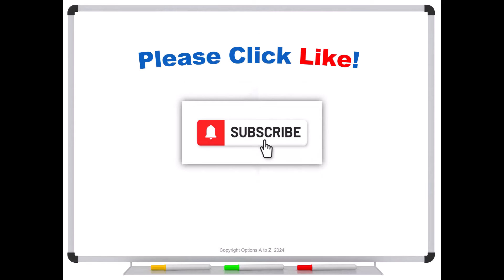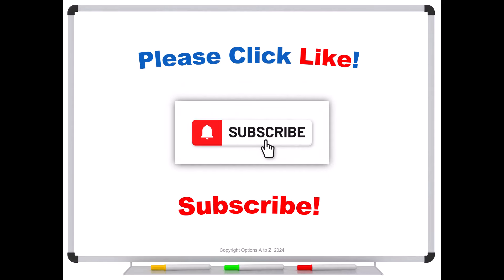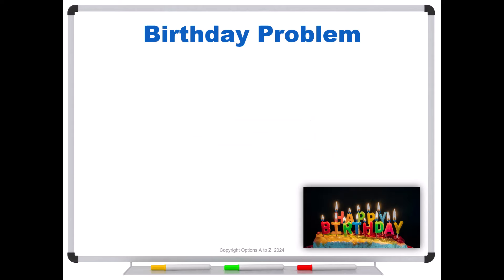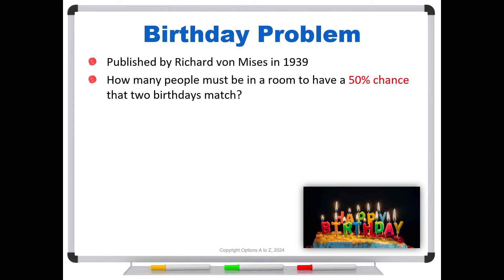And before we get started, as always, please be sure to click like and subscribe. It's truly appreciated and helps to promote the channel. So let's start off with the birthday problem. This is a famous example in statistics. Anybody who has had statistics has probably seen this problem, but there's a reason that it's so good because it is so counterintuitive. So this problem was actually first published by Richard von Mises in 1939. And the question is how many people must be in a room to have a 50% chance that two birthdays match.